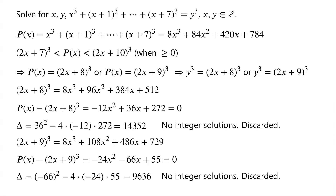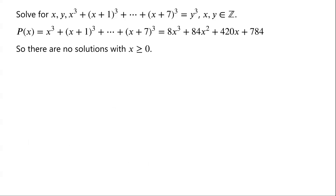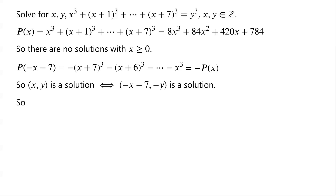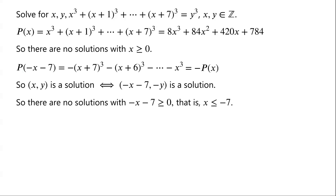In summary, the original equation has no integer solutions when x ≥ 0. We notice that p(−x−7) equals (−x+7)³ plus (−x+6)³ plus … minus x³, which equals −p(x). This implies (x, y) is a solution if and only if (−x−7, −y) is a solution. Since there are no solutions when −x−7 ≥ 0, i.e., when x ≤ −7, we only need to check x from −6 to −1, giving 6 possibilities.